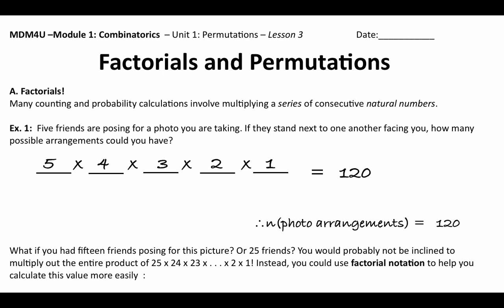But what if you had 15 friends, or 25 friends? You wouldn't want to sit there and go 25 times 24 times 23 times 22 times 21, all the way down to 1 for each position. Instead, you're going to use factorial notation to help you calculate its value more easily.